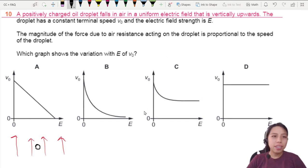And it's at a constant speed, and it's falling - that's important. Oil drop is falling with a certain velocity and it's positively charged. Let's add in all the forces.